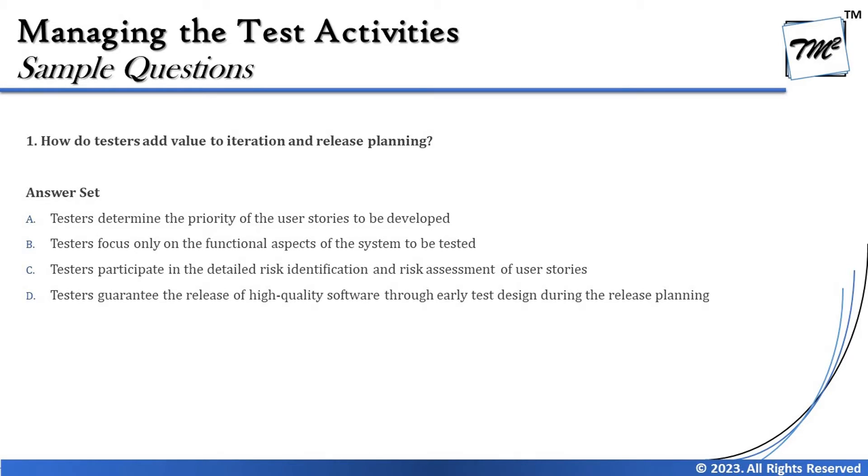Option A says testers determine the priority of user stories to be developed. Prioritization is not limited to iteration planning alone, and if you look at the principles of agile, prioritization is done along with business representatives — it's not a tester's responsibility alone. Priority of work is mainly driven by the business, working together with the entire team. So in the context of both release and iteration planning, this is not the right answer.